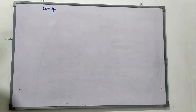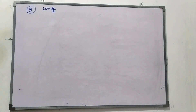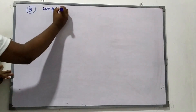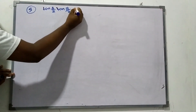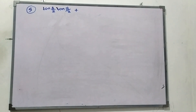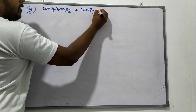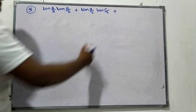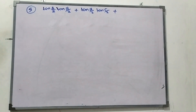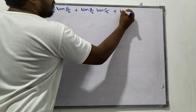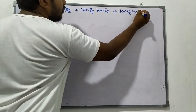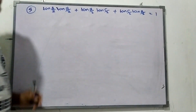This simplifies to tan A by 2 times tan B by 2. Now I want to prove that tan A by 2 plus tan B by 2 plus tan C by 2 equals 1. Assuming A plus B plus C equals π.